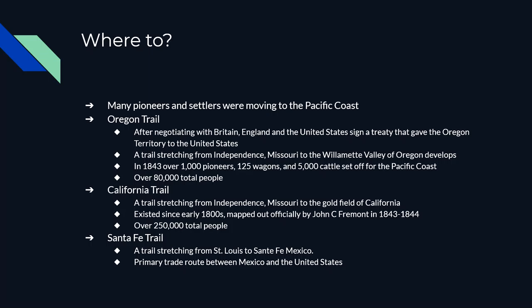What was the Oregon Trail itself? It was a trail that stretched from Independence, Missouri, all the way to the Willamette Valley of Oregon. It was so heavily traveled that even today in 2021, in certain places, the remains of the Oregon Trail can be seen. By 1843 alone, we have over a thousand pioneers, over 125 wagons, and 5,000 cattle setting off for the Pacific coast, a place they'd never seen before. By the time the traveling was all done, there were over 85,000 people who made the journey.